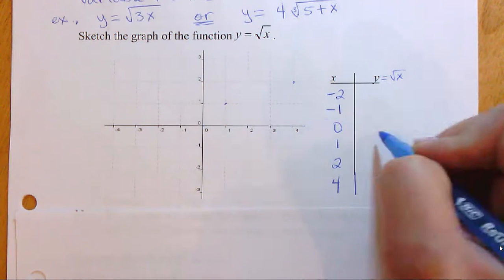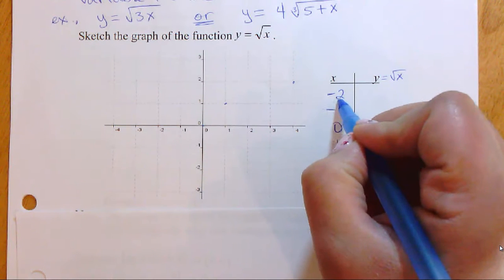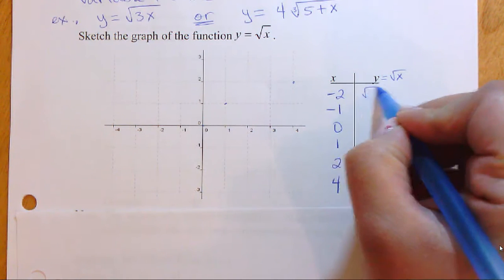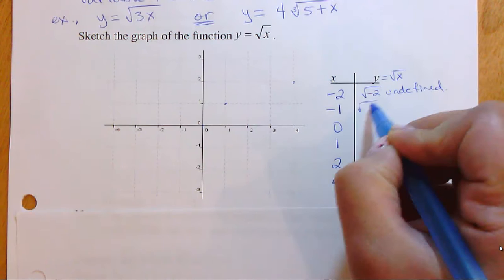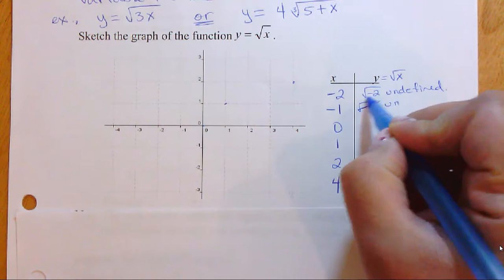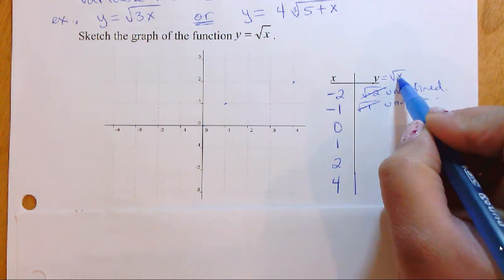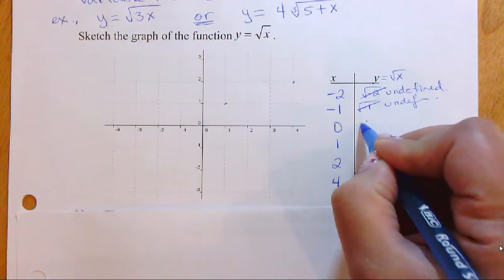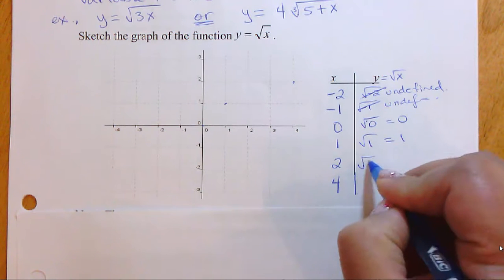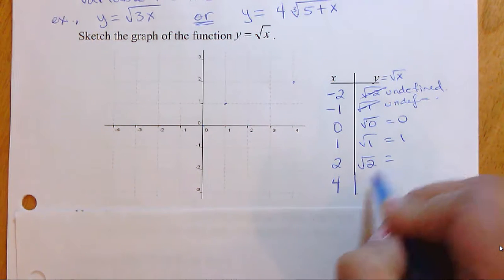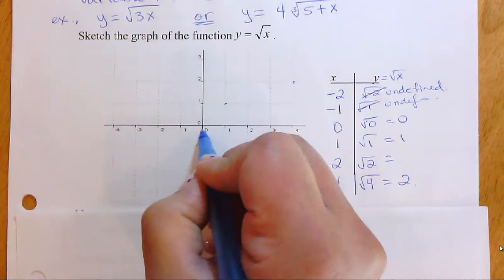Just to get familiar with it, we're going to build a quick table of values. If I take negative two and put it under the square root sign, it's undefined — we don't deal with negatives under the square root. For zero, we get zero. Square root of one is one. Square root of two is just square root of two. Square root of four equals two.